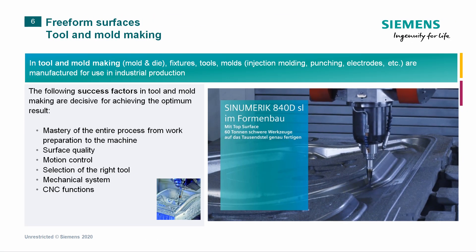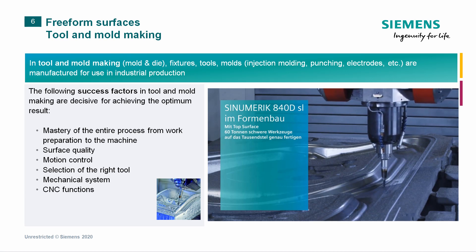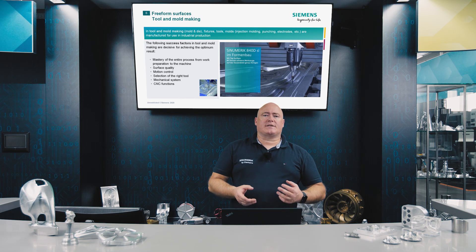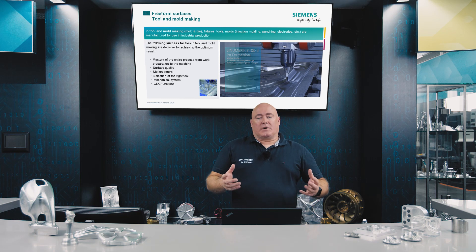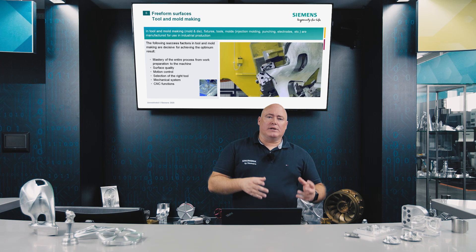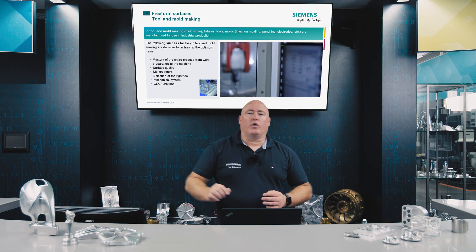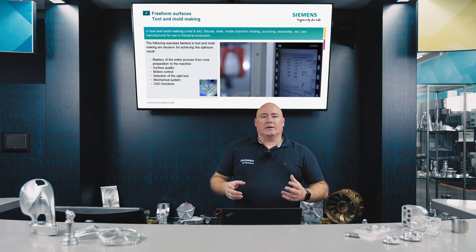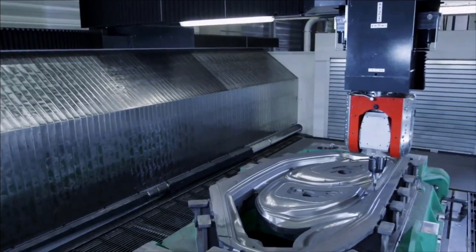Freeform surface machining in mold and die making involves typical machining operations for very small unit quantities or batch sizes — sometimes even a single item. Such typical freeform surfaces are not manufactured in mass production. Freeform surfaces are samples for certain molds and dies — molds and dies with which products are reproduced in plastic injection molding processes.